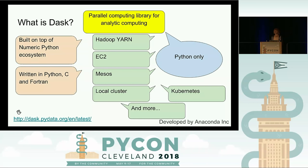What is Dask? Dask is a parallel computing library for analytic computing — notice there is no general purpose wording here. Dask is built on top of the numeric Python ecosystem, also known as NumPy. It's written in Python, C, and Fortran. You can run it on YARN, EC2, Mesos, as a local cluster, and Kubernetes. You can also write your own adapters. Dask is Python only, which is good for us, and it was developed by Anaconda Project.